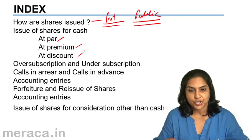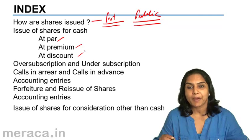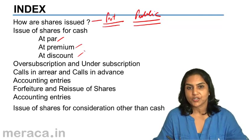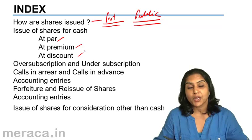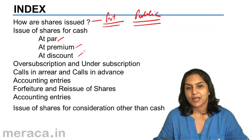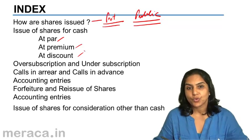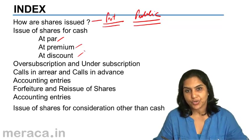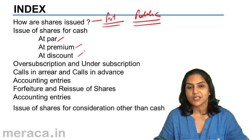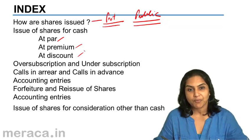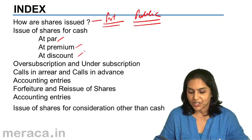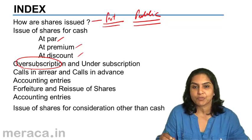When shares are issued, or when the public is asked to subscribe to the shares of a company, there could be oversubscription. That is, the public subscribe to more shares than those issued. A company may have made an issue for 10 lakh shares; maybe the public subscribe for 15 lakh shares. That is a case of oversubscription.